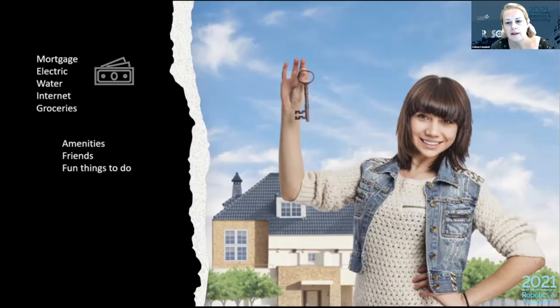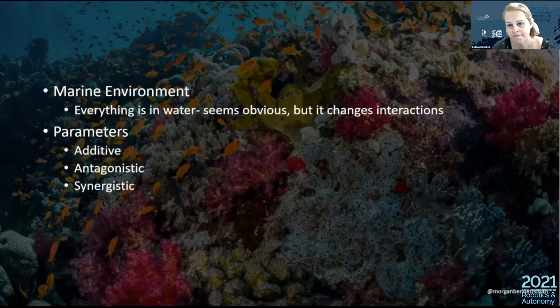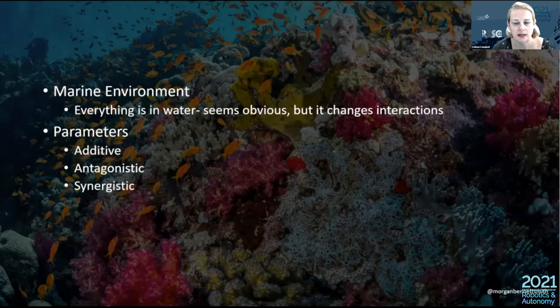What if Jane lives in a neighborhood with a lot of robberies, or the local school is underperforming, or there are no doctors nearby so her health suffers? These are all different costs impacting the way Jane lives. In the marine environment we see similar costs — while fish don't have a mortgage, they do look for a suitable place to live. Some parameters are easily added together like Jane's bills, but others are compounded in ways we can only understand through statistical analysis.